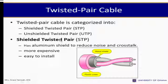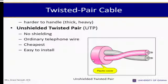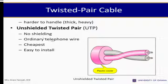The shielded twisted pair has aluminum shielding to reduce noise and crosstalk. It is more expensive and easy to install, but harder to handle because it is thick and heavy. The unshielded twisted pair (UTP) has no shielding — it is used in ordinary telephone wires and is the cheapest and easiest to install.